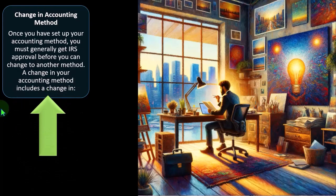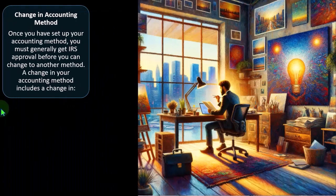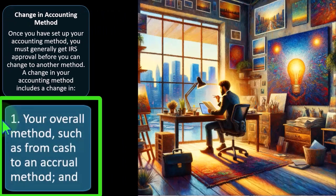Regarding change in accounting method: once you have set your accounting method, you must generally get IRS approval before you can change to another method. A change in your accounting method includes a change in the overall method, such as from cash to an accrual method. One of the core concepts of accounting is consistency, because we want to be able to make comparisons year over year. We're typically thinking about internal decision-making from management as well as external decision-making for investors using financial statements, so I want comparable performance statements year over year — consistency.